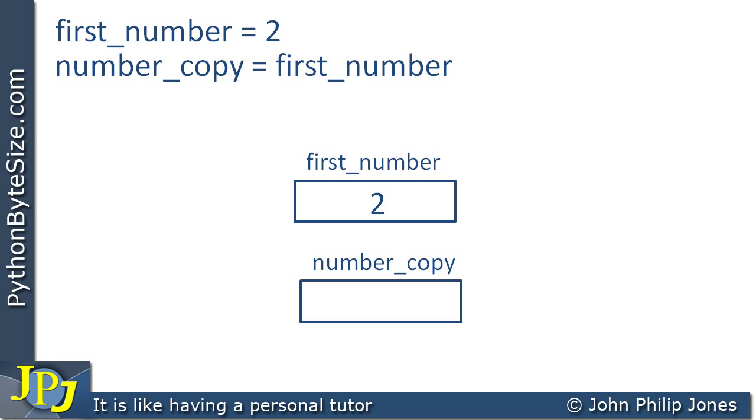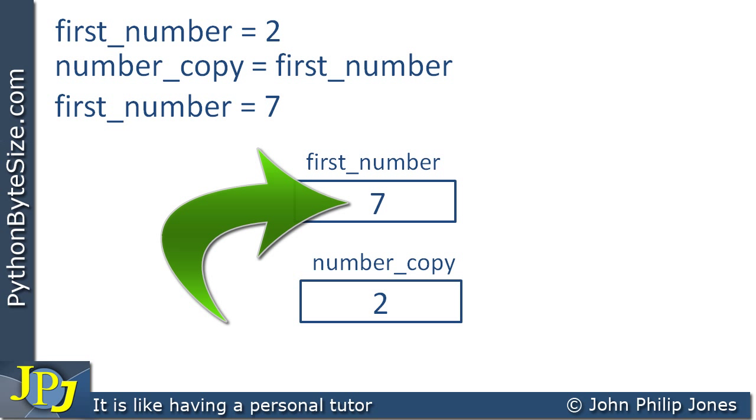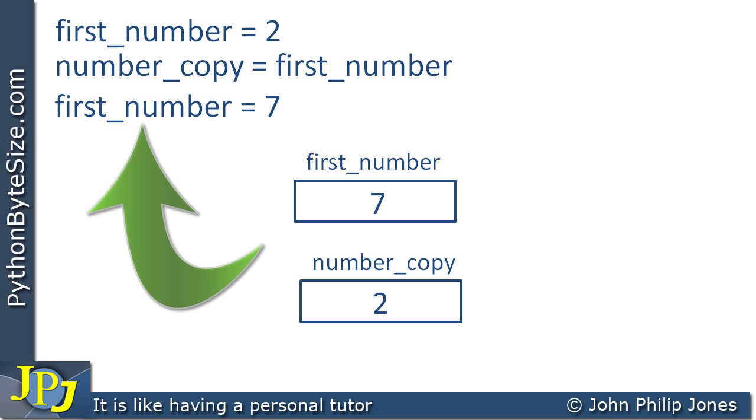Now we create another variable called number_copy and it is assigned what's stored in first_number. So far this is very similar to the program you looked at in the previous video, but we have this additional step: first_number = 7. You can see that the 2 that was stored in the variable first_number has now been overridden by the 7.